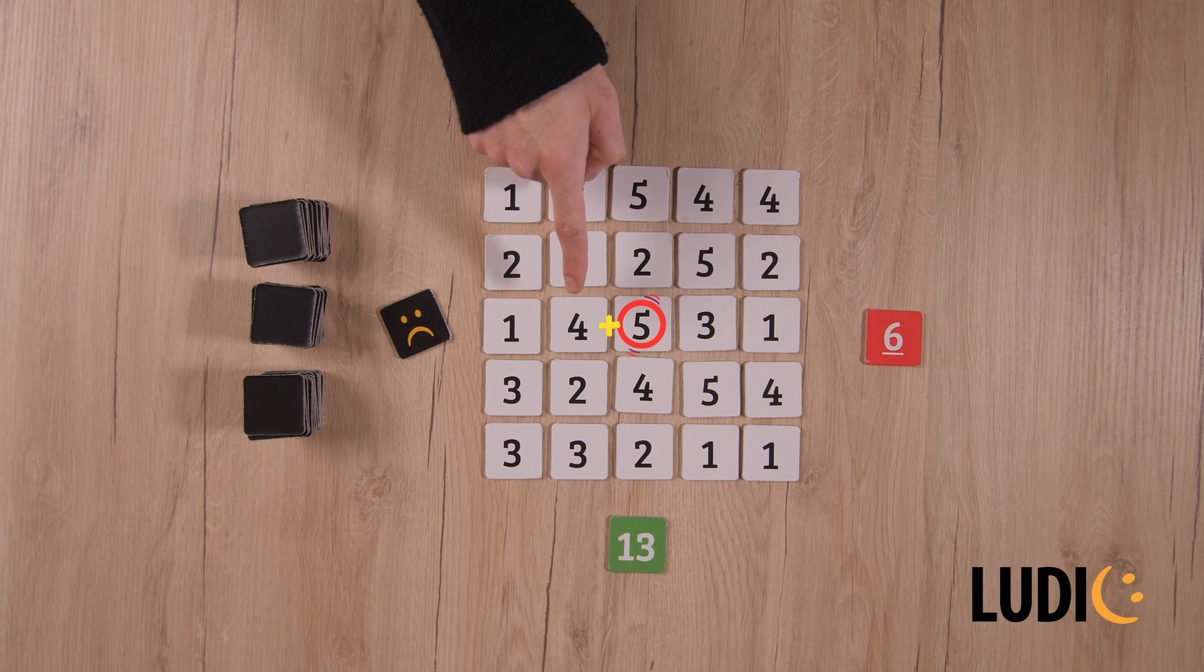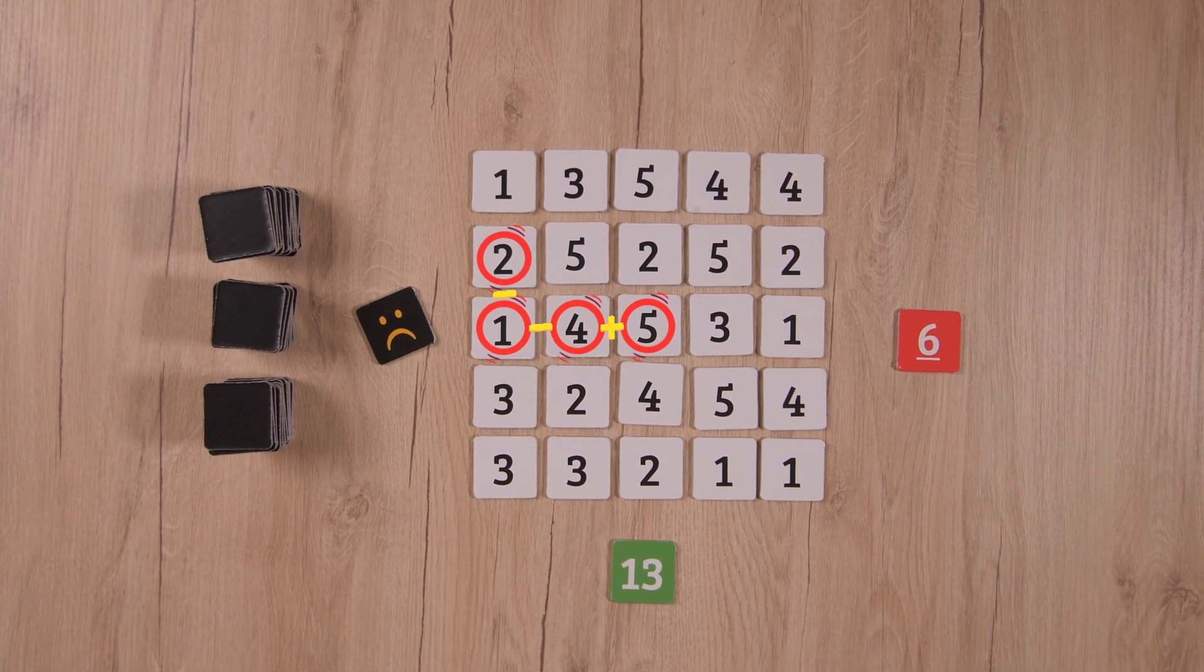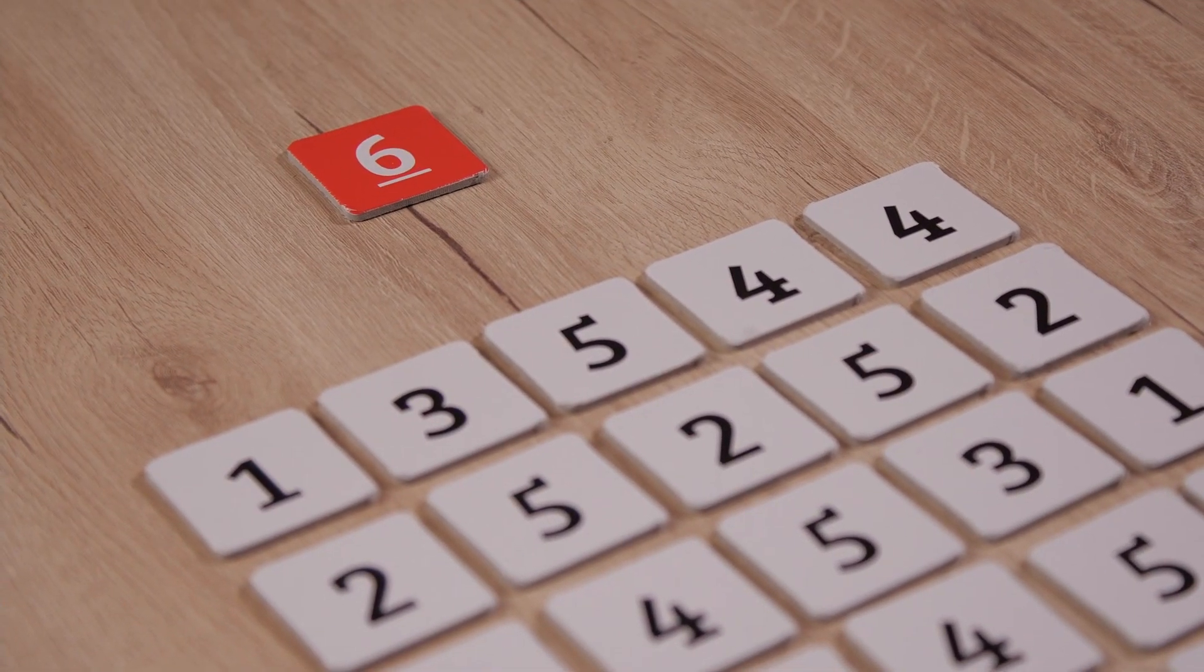5, plus 4, minus 1, minus 2, equals 6. Brilliant! The calculations are correct, and the player wins the goal tile.